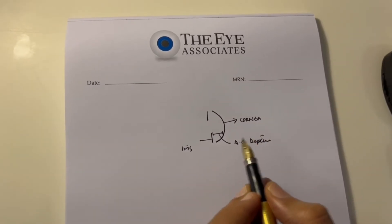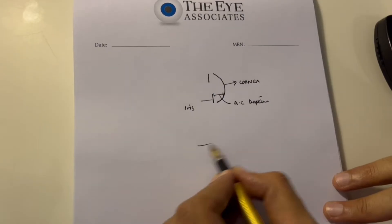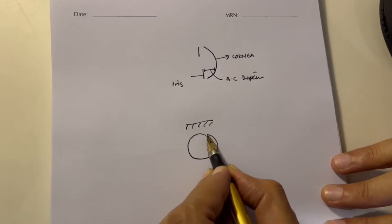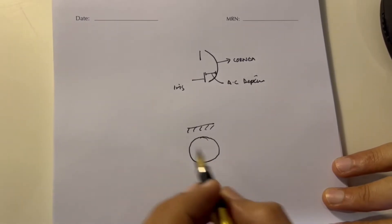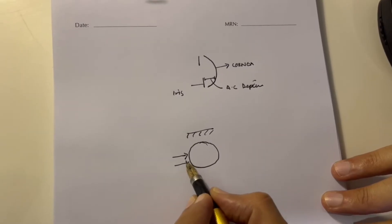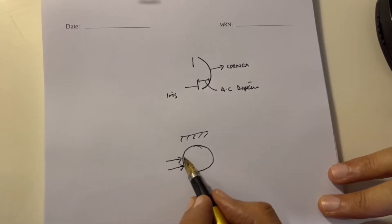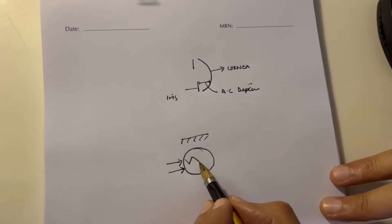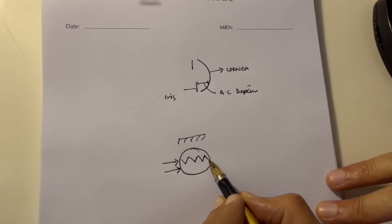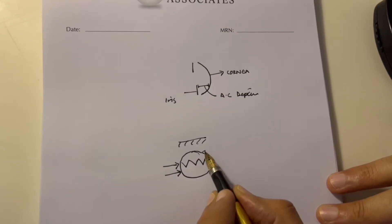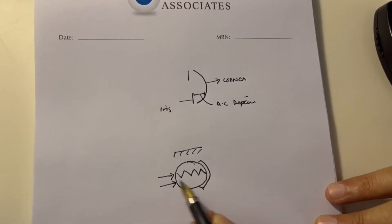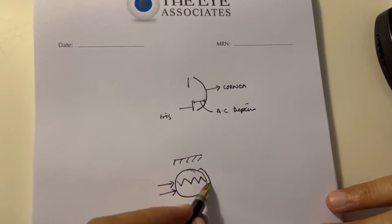The other thing you do is look at the cornea from the primary position and shine a light on the temporal limbus. The light will pass through the anterior segment and form a crescent on the opposite limbus.